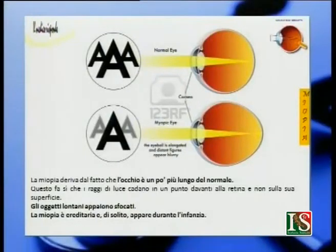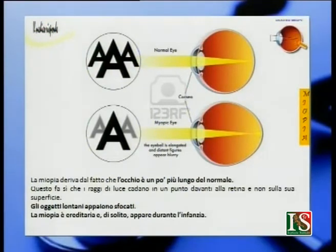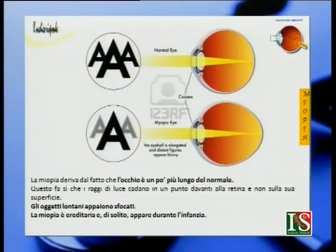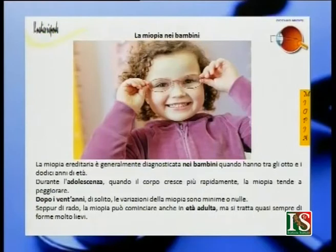Da cosa deriva la miopia? La miopia deriva dal fatto che l'occhio è un po' più lungo del normale. Questo fa sì che i raggi di luce cadano in un punto davanti alla retina e non sulla sua superficie. Gli oggetti lontani appaiono sfocati, mentre quelli vicini si vedono ancora bene, soprattutto se la miopia non è alta. La miopia è una condizione ereditaria e di solito si manifesta già durante l'infanzia.